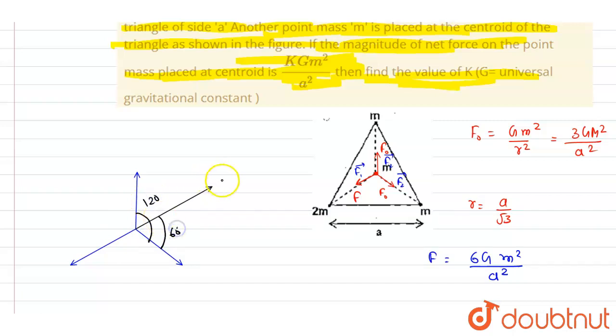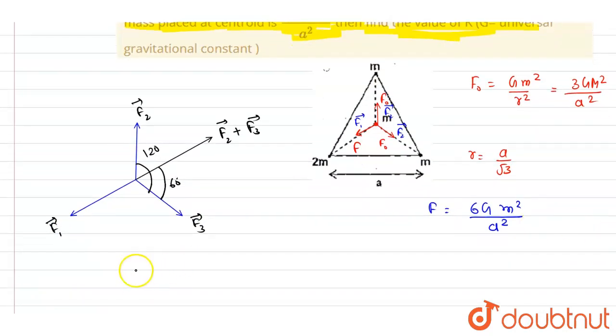And it will be like this. This will be f2 plus f3. Since they are having equal magnitude, so it will be like this. So you can just get the value of f2 plus f3. Since equal vectors, I will use the formula of equal vector addition: